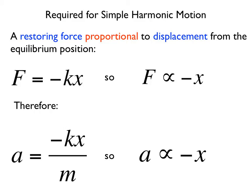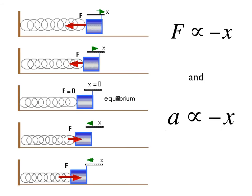Recall the requirements for simple harmonic motion. By substituting Hooke's law into Newton's second law, we can see that the acceleration is directly proportional but opposite in direction to the displacement. This is an important requirement for simple harmonic motion. An object moves back and forth with a middle position called the equilibrium position, and two extremes — all the way left is one extreme, all the way right is the other, and halfway between is the equilibrium position.